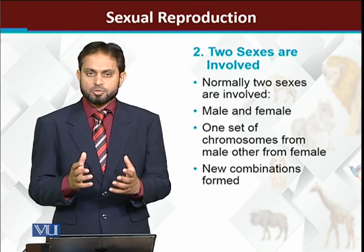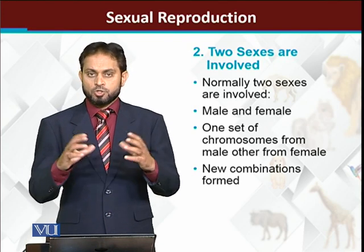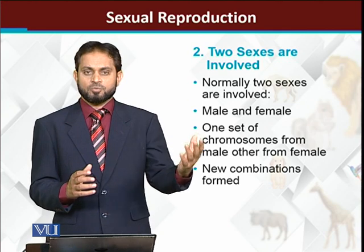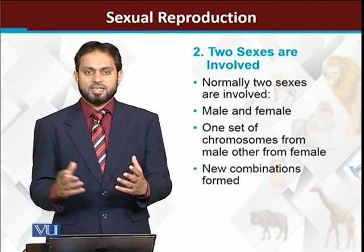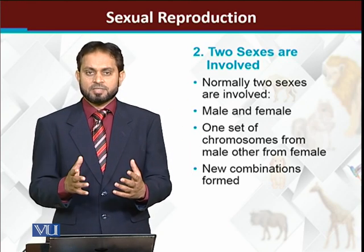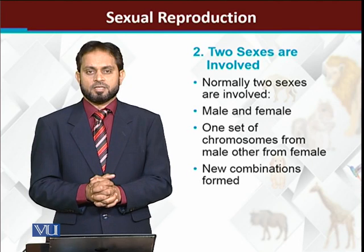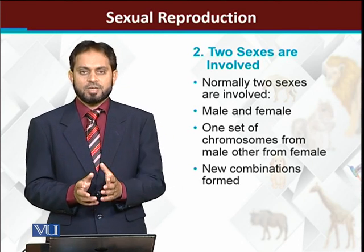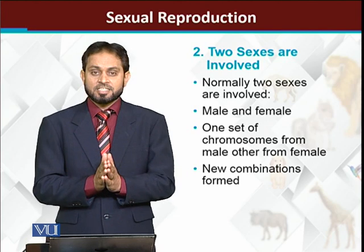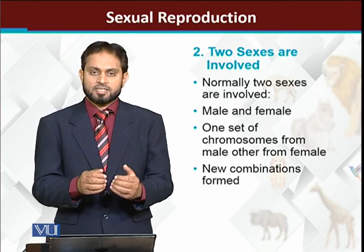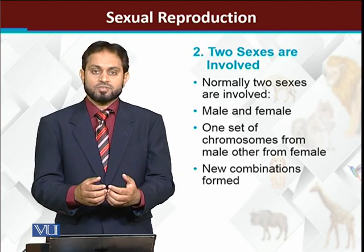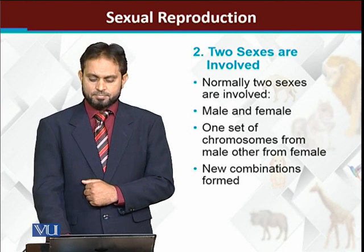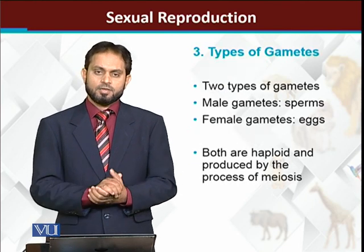DNA comes from both parents — father and mother — so a new genetic combination is formed. This is the importance and value of sexual reproduction: new gene combinations are formed, due to which the young ones produced are more successful than their parents.